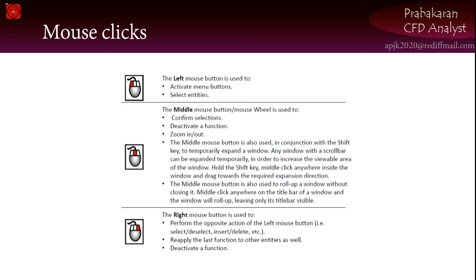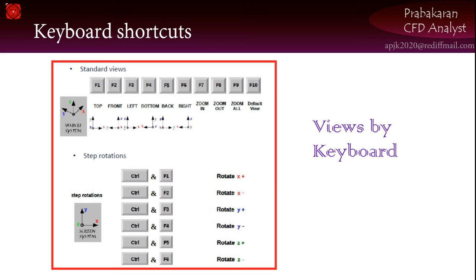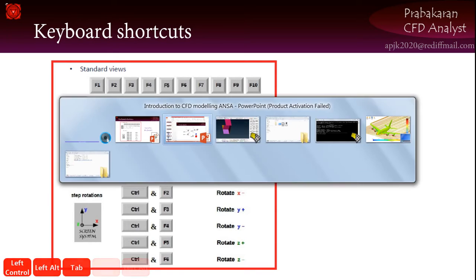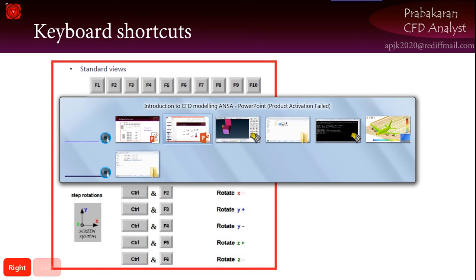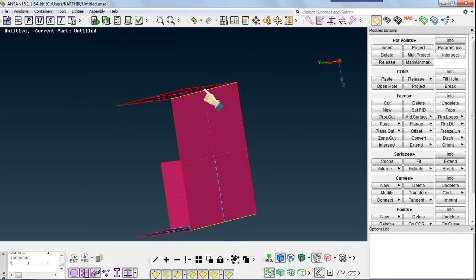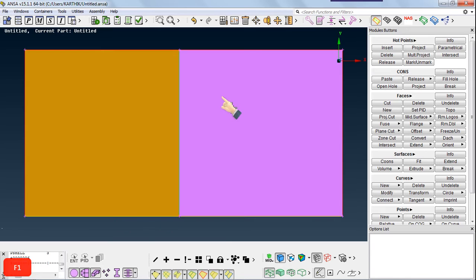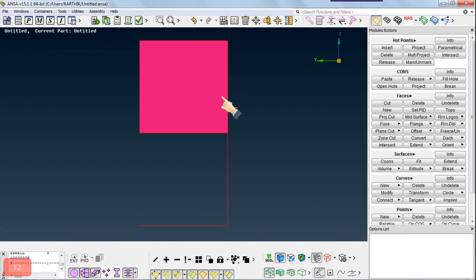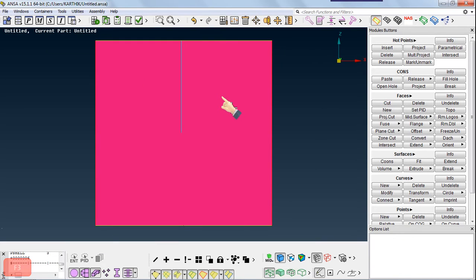These are the mouse controls and these are the keyboard shortcuts. F1 is for top view, F2 is for front view, and F3 is for left view. Ctrl plus A will be used to rotate with respect to X. Press F1 on your keyboard and it goes to top view, F2 is front view, F3 is side view.